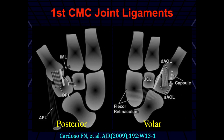Looking at the anatomy posteriorly or dorsally, we see the dorsal ligament, the posterior oblique ligament, and the intermetacarpal ligament between the first and the second — these are really thickenings of the dorsal capsule. On the volar side, you have the anterior oblique ligament, which is one of the more commonly torn ones, and then the capsule and capsular attachments, and the ulnar collateral ligament. Tears commonly involve the AOL ligament, which can lead to instability and lateral subluxation of the base of the first metacarpal with respect to the trapezium.